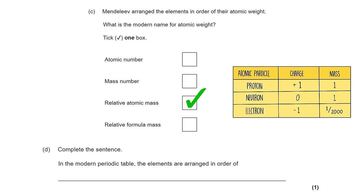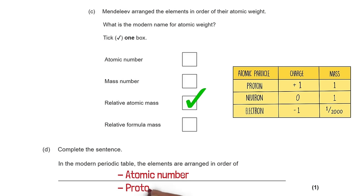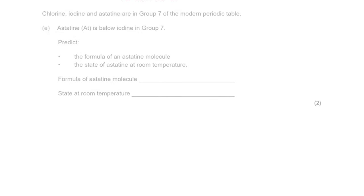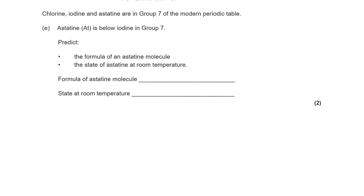Complete this sentence: in the modern periodic table, the elements are arranged in order of... The answer is atomic number, or proton number. The following question talks about group 7 of the periodic table.